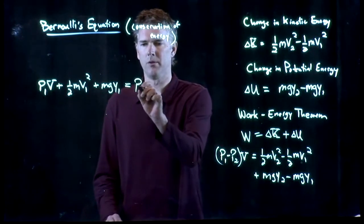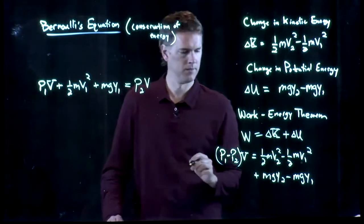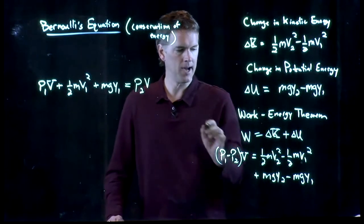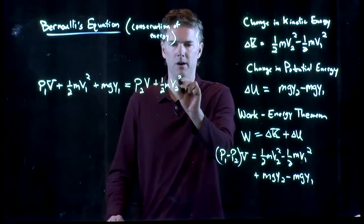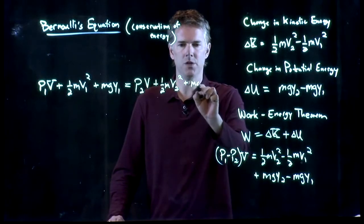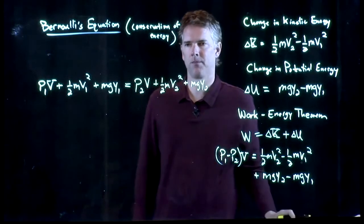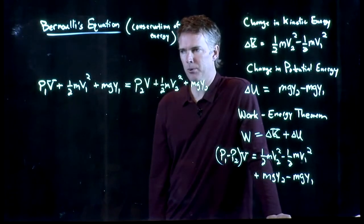And now all the stuff on the right, I want to leave as number 2. So let's move P2 over to the right side. And we have 1/2 M V2 squared and we have an M G Y2. All right. That looks pretty good.